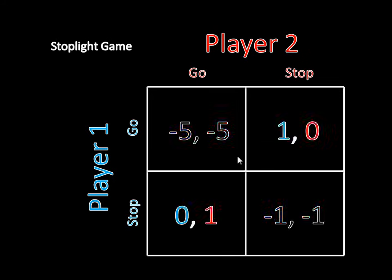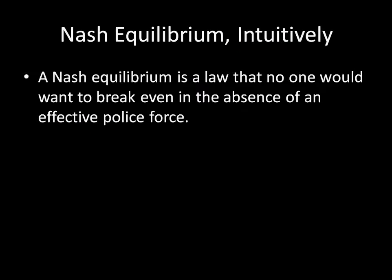In contrast, the two outcomes where one player goes and one player stops are Nash equilibria — in fact, they're the only pure strategy Nash equilibria of this game. To wrap things up: a Nash equilibrium intuitively is a law that no one would want to break, even in the absence of an effective police force. I hope this video helped your understanding of what a Nash equilibrium is, and we will continue to learn more about Nash equilibria in later videos. Thanks.